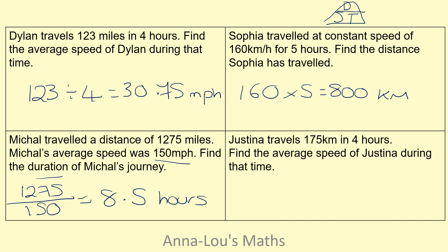Last one: Jacinta travels 175 kilometers in four hours — find the speed. Speed is distance divided by time: 175 divided by four, which gives 43.75 kilometers per hour.